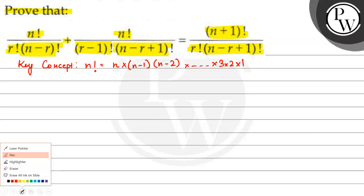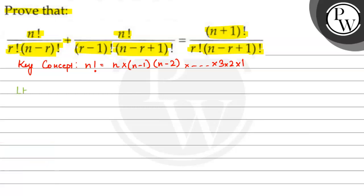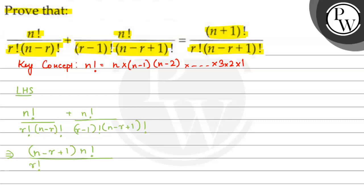When we analyze this question, we take the LHS — the left hand side. What is given? n factorial upon r factorial multiplied by n minus r factorial, plus n factorial upon r minus 1 factorial multiplied by n minus r plus 1 factorial. Now in the LHS, we multiply and divide the first term by n minus r plus 1.